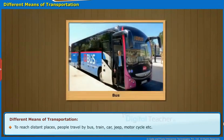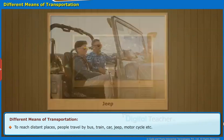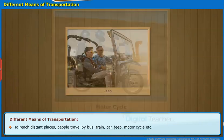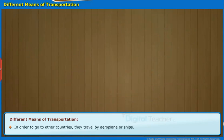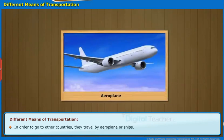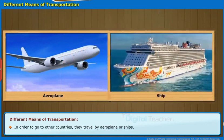To reach distant places, people travel by bus, train, car, jeep, motorcycle, etc. In order to go to other countries, they travel by aeroplane or ships.